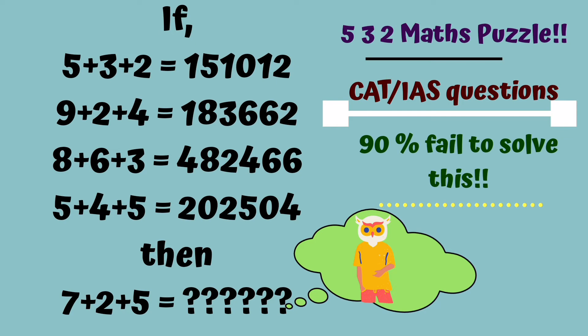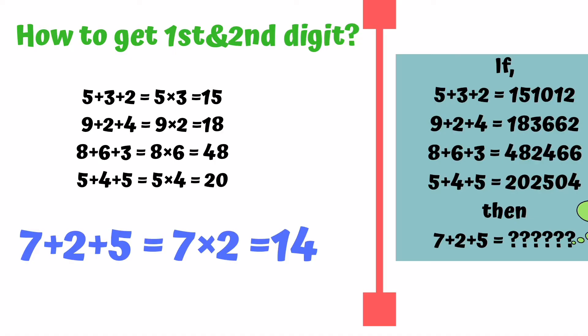First, let's look at how to get first and second digits. It's very simple. First two digits multiply - first times second. Then you can see: 15, 18, 48, 20. The final value of 7+2+5 is 7×2 = 14.